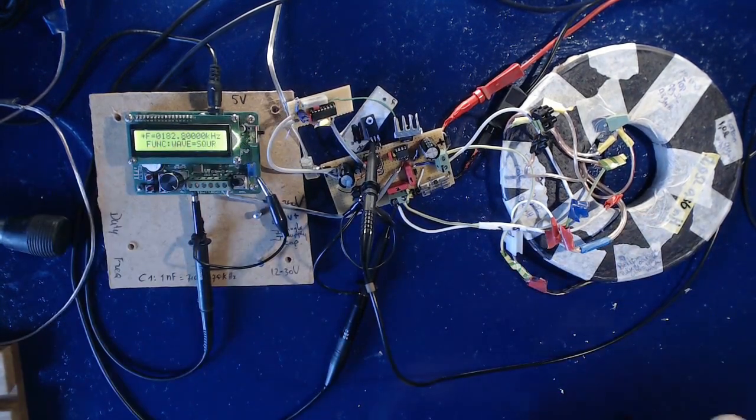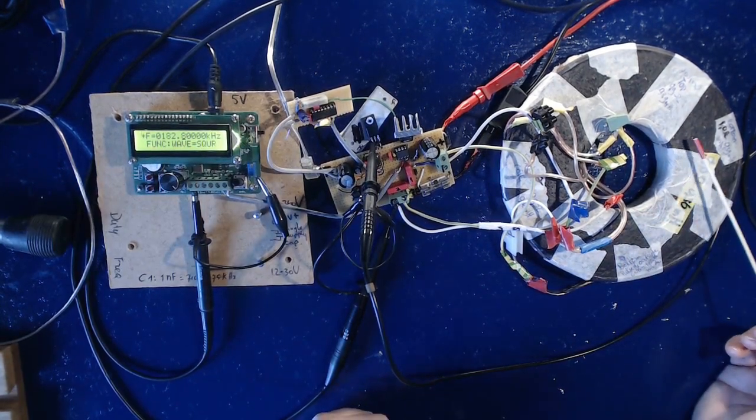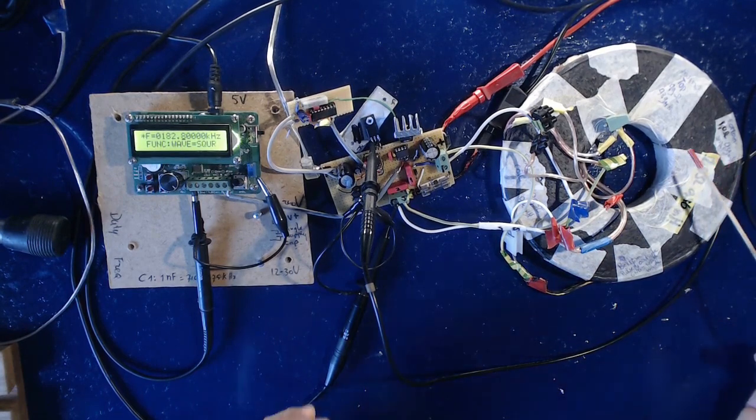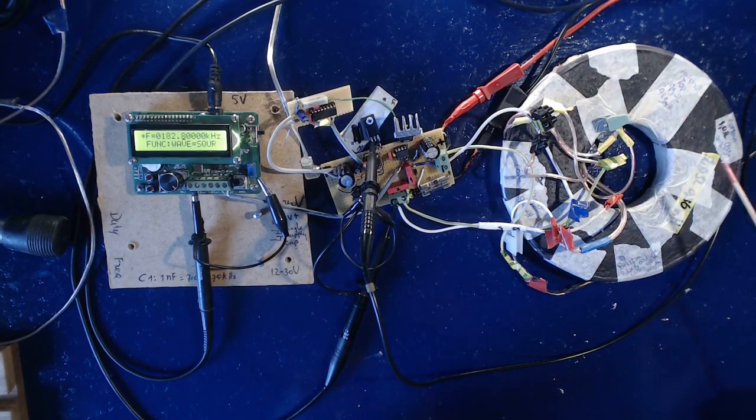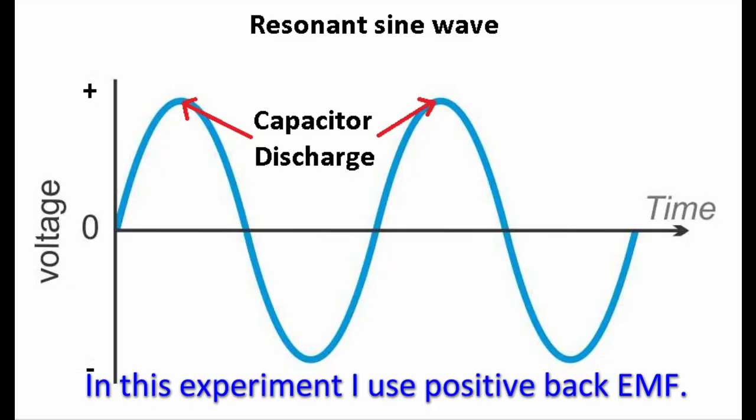This means that the resonant sine wave, the voltage, is not only from the magnetic induction but also from the capacitor discharge. When the capacitor is discharged at the maximum voltage, the voltage rises in the resonant coil.